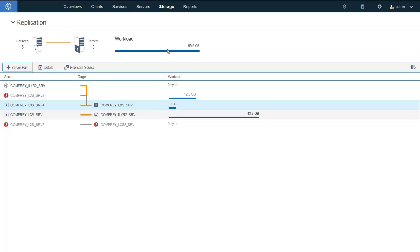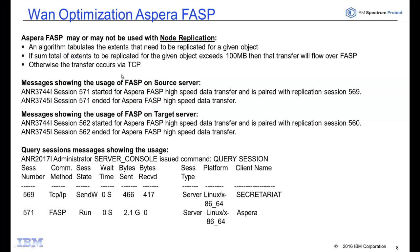In Properties, you now have the Aspera FASP option and you can enable or disable it from there. When replication or protect storage pool occurs between version 7.1.6 X Linux servers, they will use Aspera FASP technology. Even if you've turned on Aspera FASP or set transfer method equals FASP, for node replication there's a possibility it might not be used. Spectrum Protect uses an algorithm to tabulate the extents that need to be replicated for a specific object, and if the sum total exceeds 100 megabytes, it will transfer with FASP; otherwise it falls back to the default of TCP/IP.